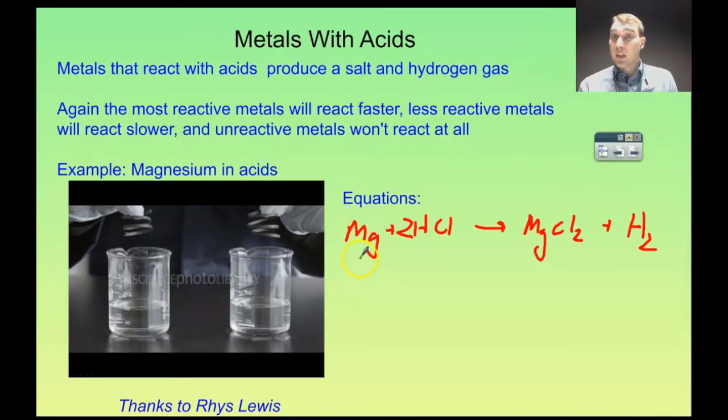So magnesium is fairly reactive so it will react with acid to produce a salt and hydrogen. But less reactive metals won't react or they'll react slower. And indeed things like gold won't react at all. Gold can be dissolved in aqua regia which is a combination of acids but it's very very dangerous.